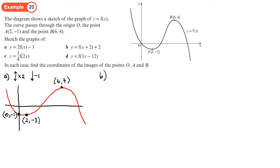Now on this one, let's write down what it's going to do. The plus two in the brackets is going to move it to the left, and then it's going to move it up. So the first bit is going to take away two from the x coordinate — let's write it as minus two — and then it's going to add two to the y coordinates. Let's draw this.